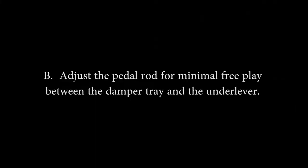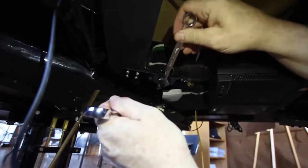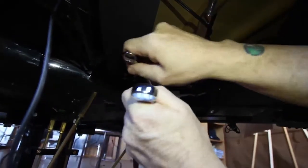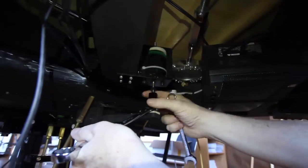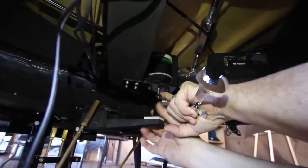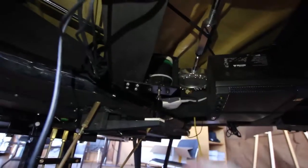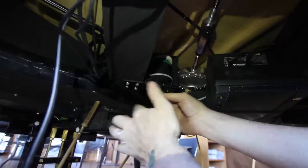Adjust the pedal rod for minimal free play between the damper tray and the under lever. Use the appropriate wrenches to loosen the lock nut on the sustain pedal rod. Adjust the long cap nut up or down until there is minimal travel before the dampers start to lift off the strings. You may find it necessary to adjust the pickup of the dampers if they are not currently lifting evenly.